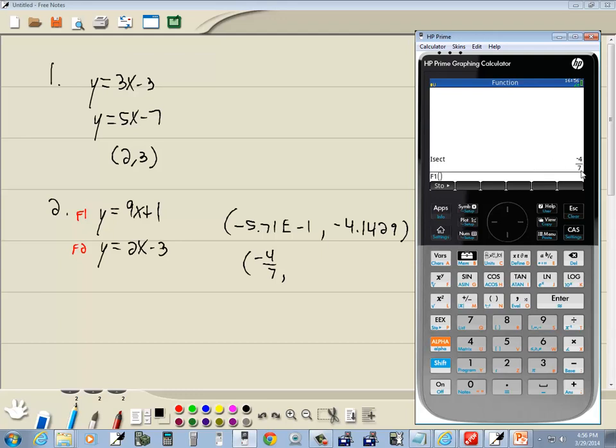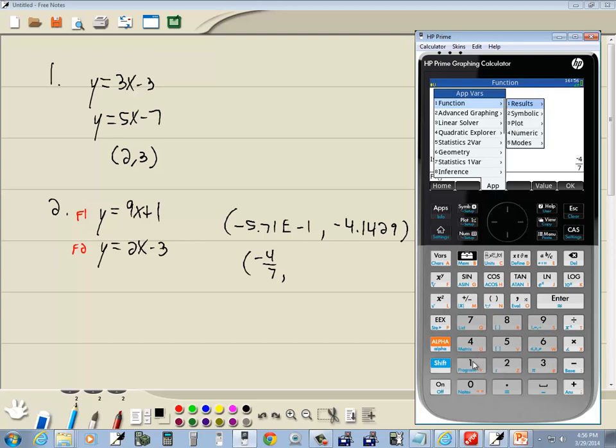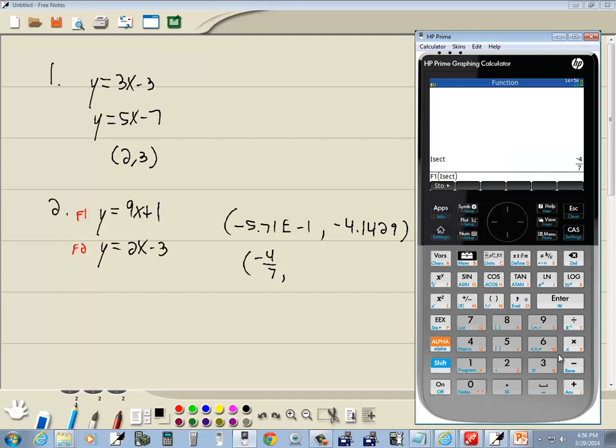And now I want to put in the intersection. I could type in negative 4 sevenths direct if I wanted to. Or simply do vars. And then function. 1 for function. 1 for results. And 2 for isect. Intersection. And press enter. And you notice we get the same decimal that we got there. Well, now if I press my fraction. You see that's negative 29 sevenths.